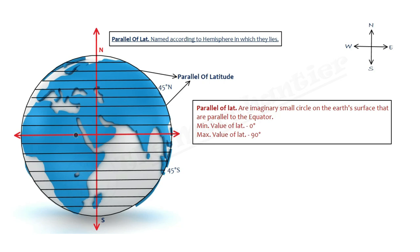Its minimum value is 0 degrees. If we talk about equator, this is 0 degrees, and maximum value is 90 degrees.